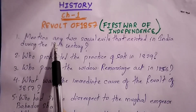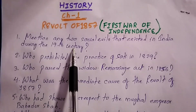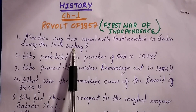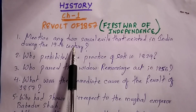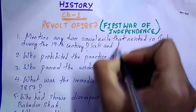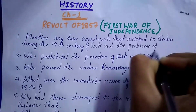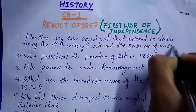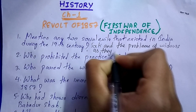Question one: Mention any two social evils that existed in India during the 19th century. The two social evils that existed in the 19th century are sati, and the problems of widows as they were not permitted to remarry.